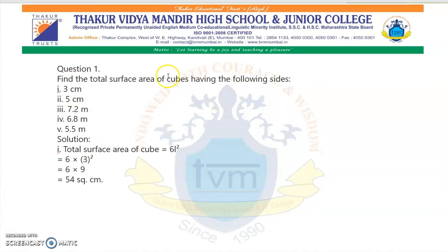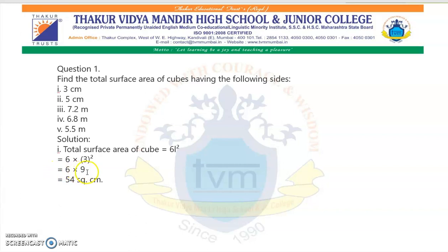Let us see some questions based on the above formulas. Find the total surface area of cubes having the following sides. Suppose the side is given as 3 cm. The formula is total surface area of cube = 6L². Substituting: 6 × 3² = 6 × 9 = 54 cm².